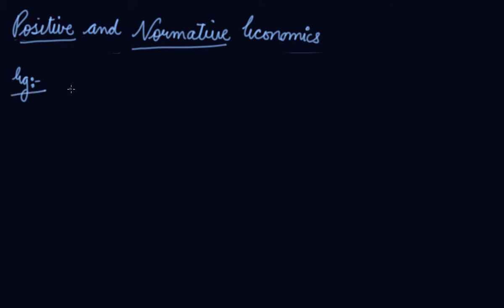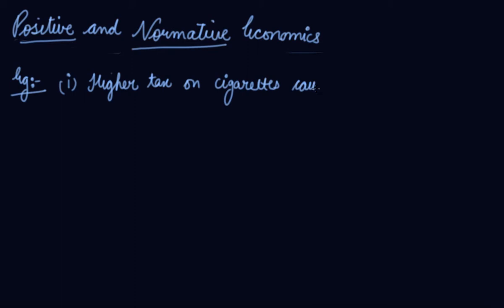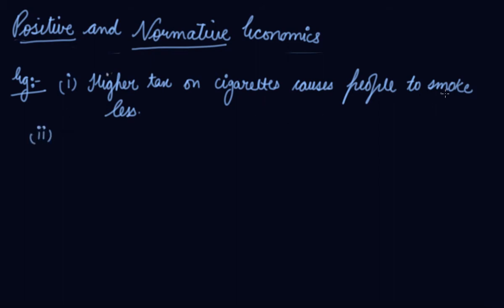Let us consider two statements. Number one: higher tax on cigarettes causes people to smoke less. Why? Because the heavy taxes will increase the price of cigarettes, and people who cannot afford cigarettes will not smoke. So, higher tax on cigarettes causes people to smoke less.